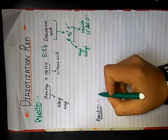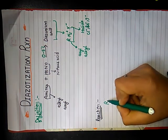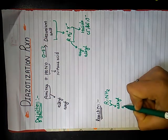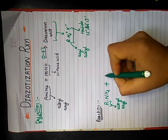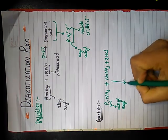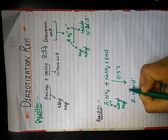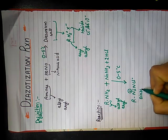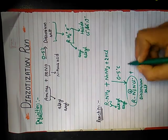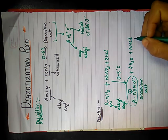Now moving to the diazotization reaction. As I mentioned earlier, it is the reaction of either alkyl or aryl amines. Taking a general amine where the R group may be alkyl or aryl, the amine reacts with NaNO₂ and 2 molecules of HCl at a temperature range of 0 to 5 degrees Celsius to form a diazonium salt. This compound is known as diazonium salt, formed with the loss of two water molecules and one molecule of NaCl. This is the general reaction of diazotization reaction.